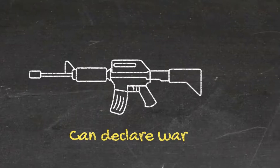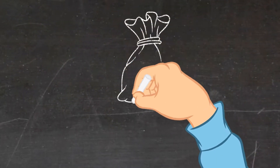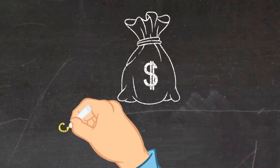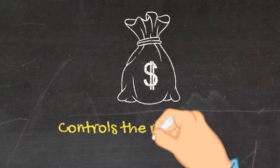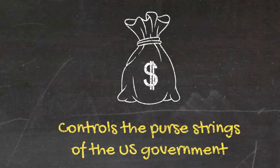In addition, the raising and dispersing of the nation's finances is the responsibility of the US Congress, meaning very little can get done by other branches of government without congressional acquiescence.